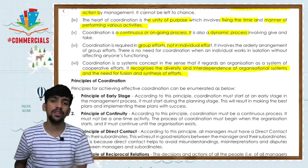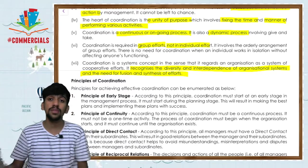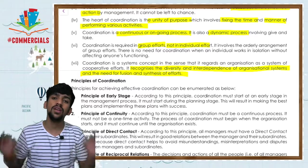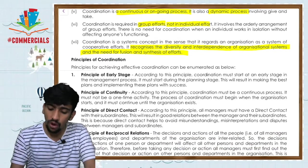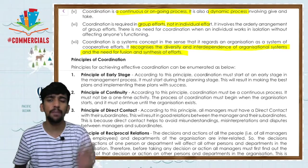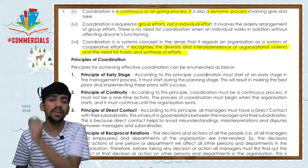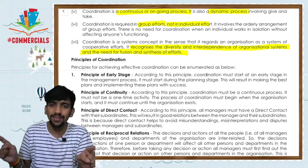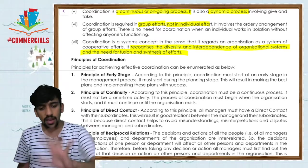Coordination is about group efforts, not individual efforts — it synchronizes everyone in one direction toward the ultimate organizational goal. Lastly, coordination recognizes the diversity and interdependence of organizational systems and the need for fusion and synthesis. For example, purchase, sales, store, and marketing departments must all coordinate; without it a firm cannot survive and its going concern would be violated.